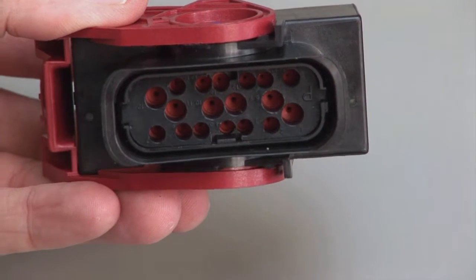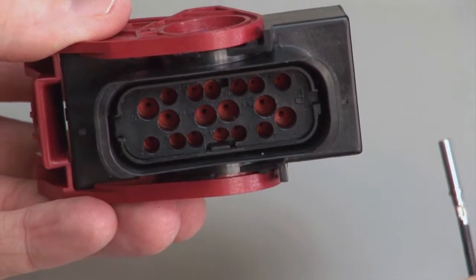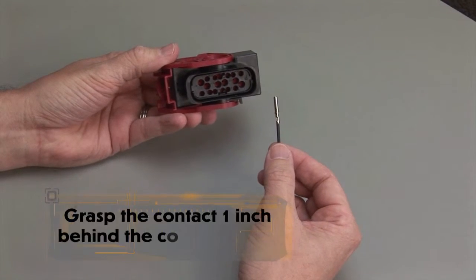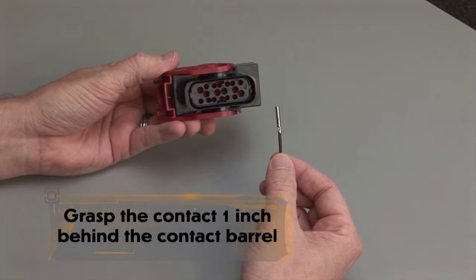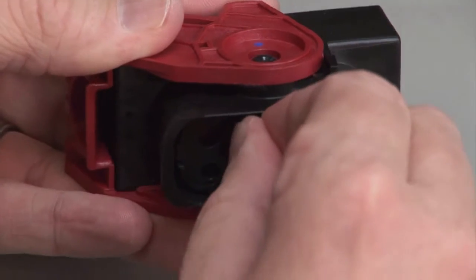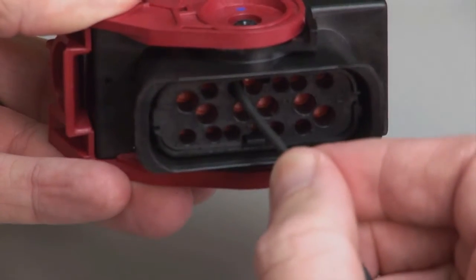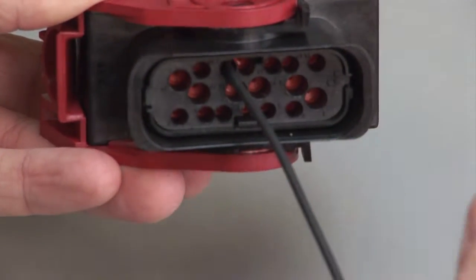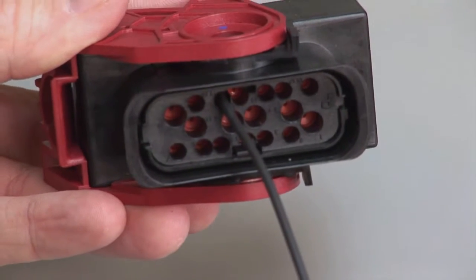Hold the connector with the rear grommet or wire router facing you. Grasp the crimped contact approximately one inch behind the contact barrel. Push the contact straight into the rear grommet or wire router until you hear and feel a click. A slight tug will confirm that the contact is properly locked into place.